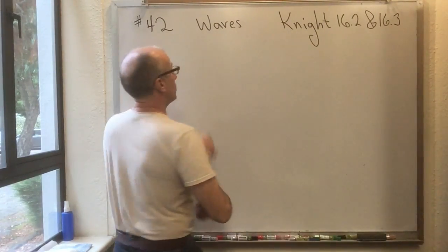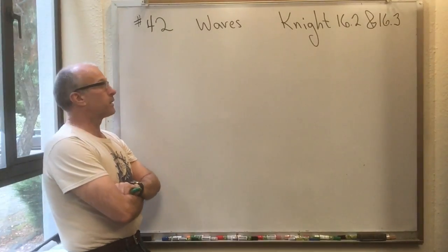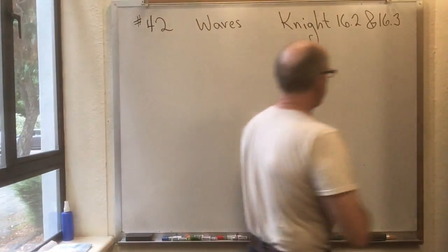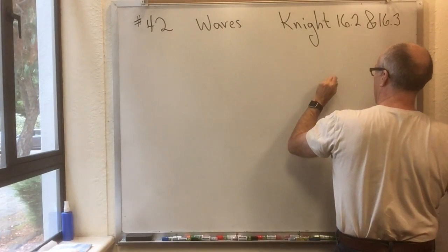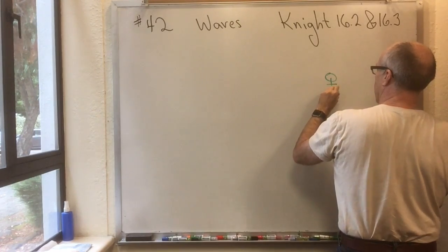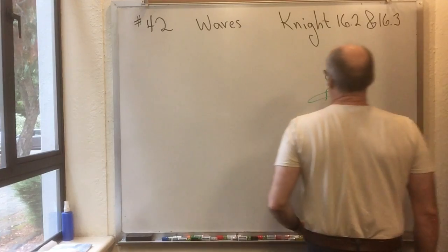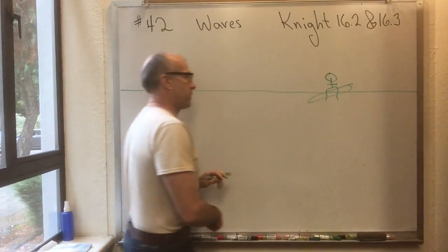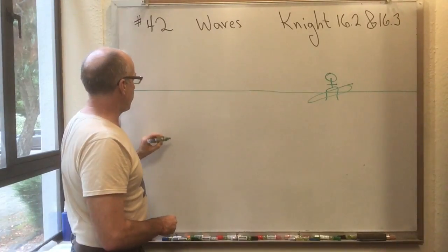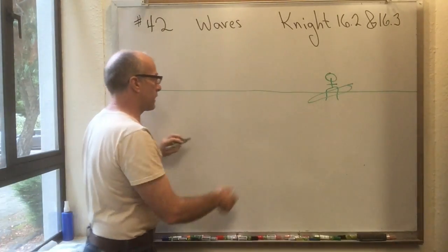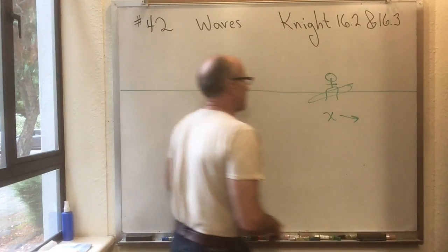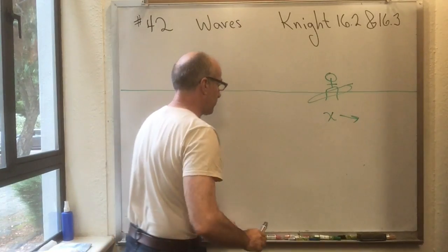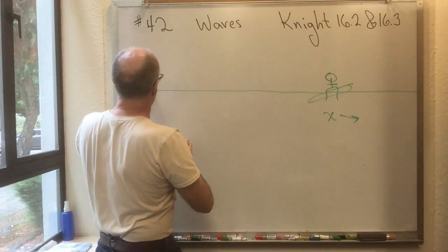This is flipped mini lecture number 42, the first one on waves. The corresponding sections are 16.2 and 16.3. To make it more visceral and Californian, let's have a surfer hanging out on a surfboard. Here's a nice flat ocean, and let's lay down a coordinate system — going to the right is the x direction. The surfer is over there waiting for waves to come in.